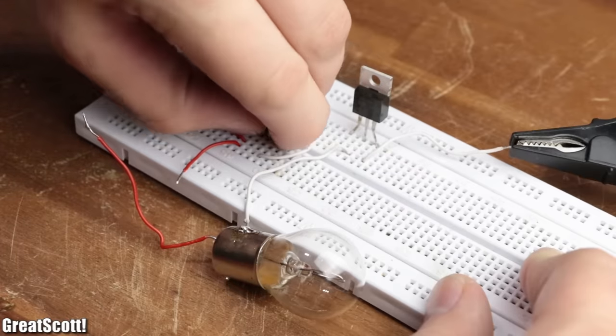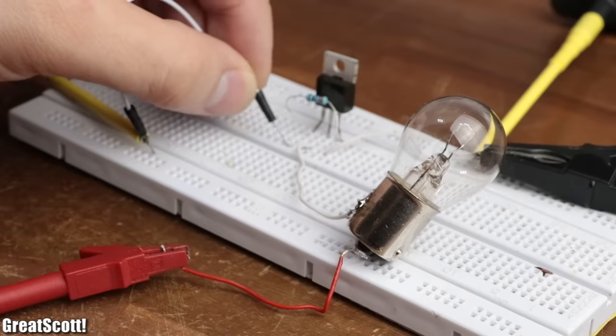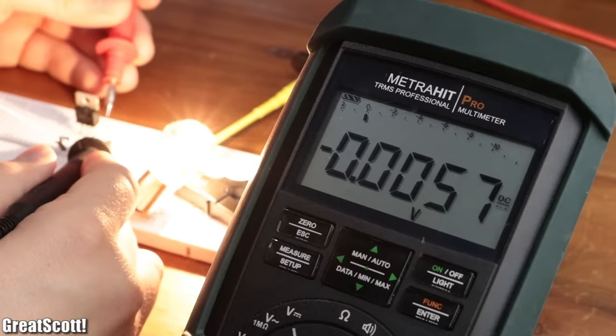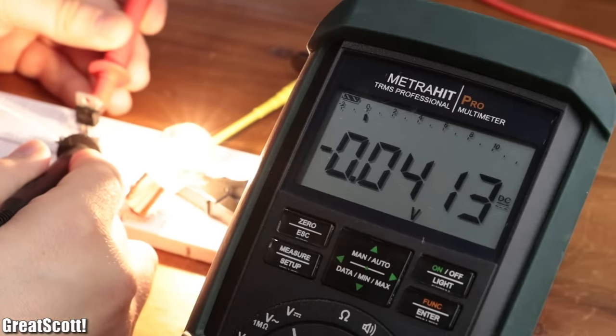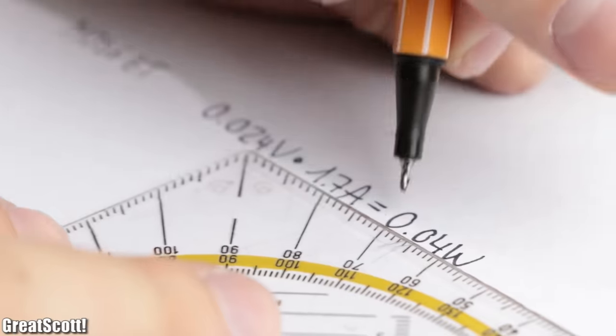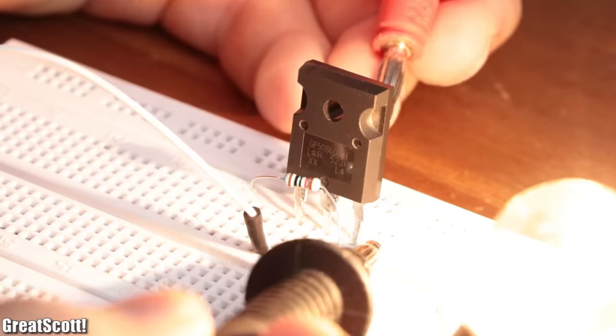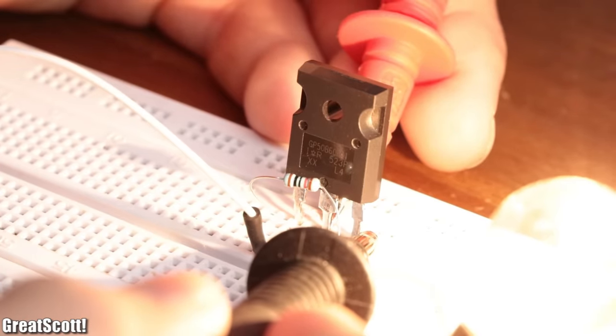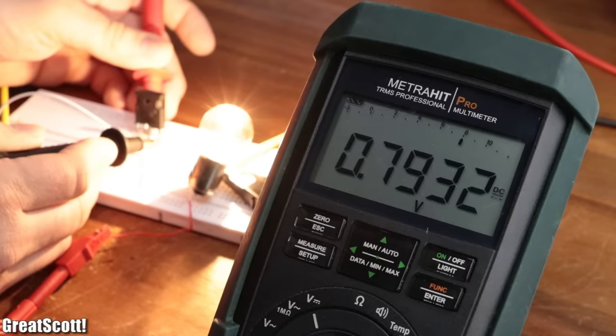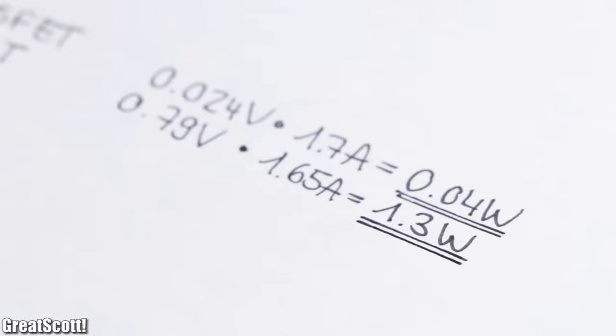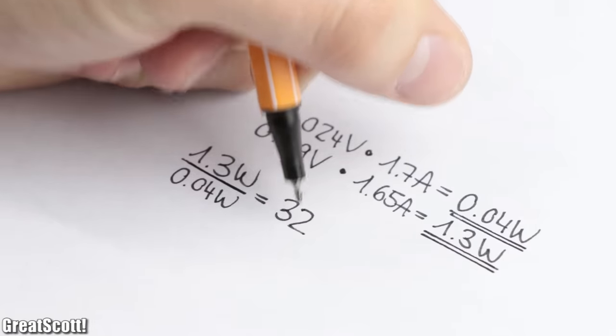Now let's get back to the light bulb example and see how much power loss each transistor creates. The MOSFET with its drain to source voltage drop of 0.024 volts at a current flow of 1.7 amps only creates a power loss of 0.04 watts. While the IGBT with its collector to emitter voltage drop of 0.79 volts at a current flow of 1.65 amps creates a power loss of 1.3 watts. That is 32 times as much.